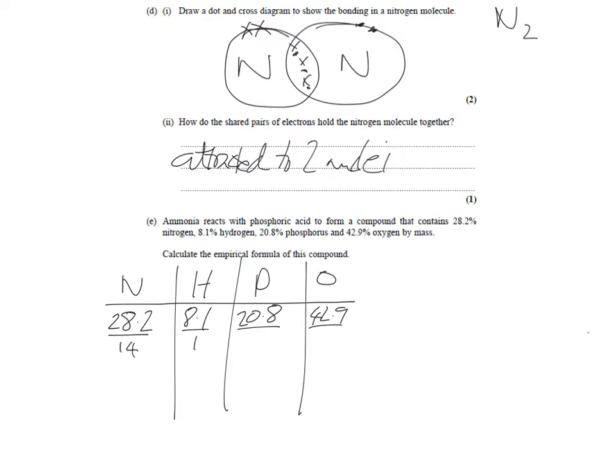Now, hopefully you should know that you now need to divide by the atomic mass. So, you need to find the atomic mass on the periodic table, which is the smaller of the two numbers next to each element. So, nitrogen is 14, hydrogen is 1, phosphorus, 31, and oxygen is 16. And you work out those numbers on your calculator and you get 2.01, obviously 8.1, 0.67, and 2.68. So, that is the ratio within the compound. But, it's not a very nice looking ratio. We need to get it to whole numbers.